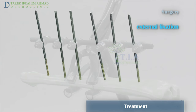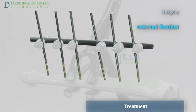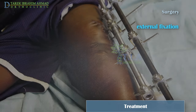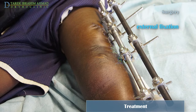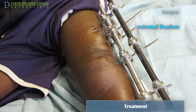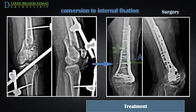External fixation is an operation where metal pins are placed into the bone above and below the fracture site, into the middle of the femur and tibia through small cuts. The pins are attached to a bar outside the skin to stabilize the fracture and hold the bones in the proper position. After secondary operations to clean the wound or recovery of skin injuries, or if the patient is physiologically optimized, the external fixator can be removed and plates and intramedullary nails or plates and screws can be placed.